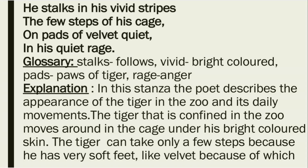First stanza: 'He stalks in his vivid stripes / The few steps of his cage / On pads of velvet quiet / In his quiet rage.' Stalk stands for follows, vivid means bright-colored, pads means paws of the tiger, and rage stands for anger.